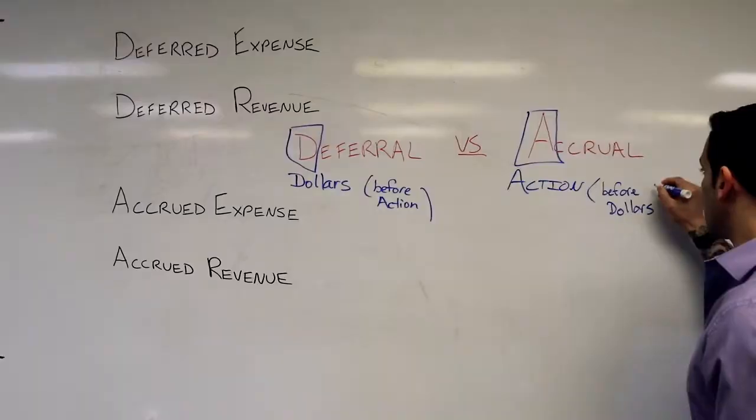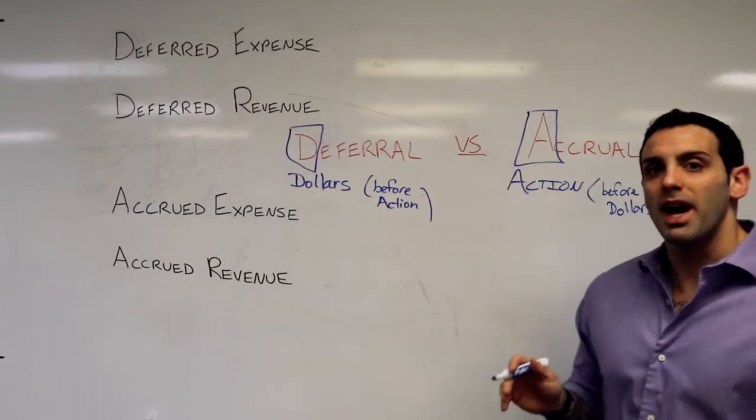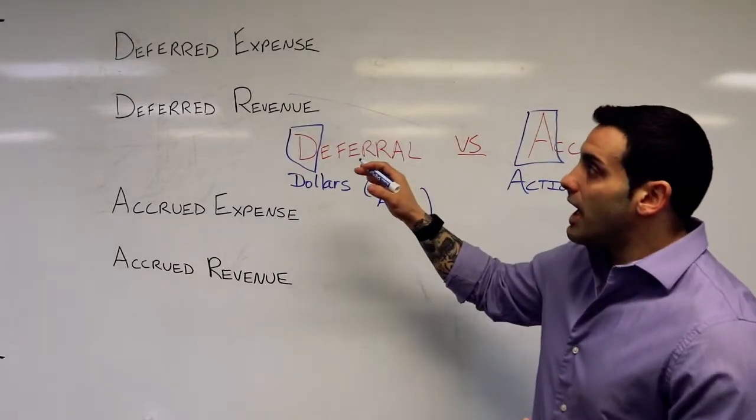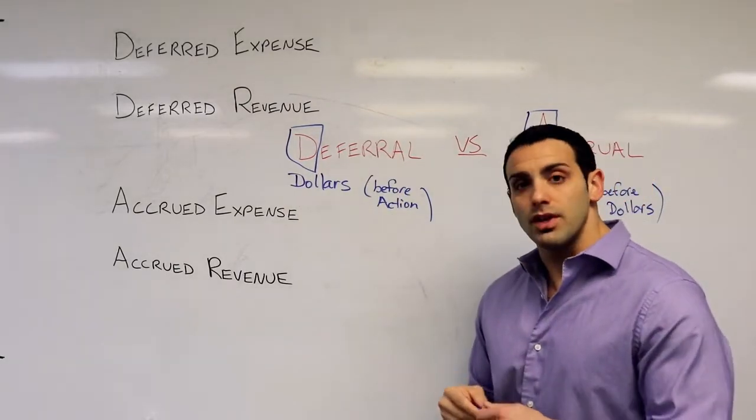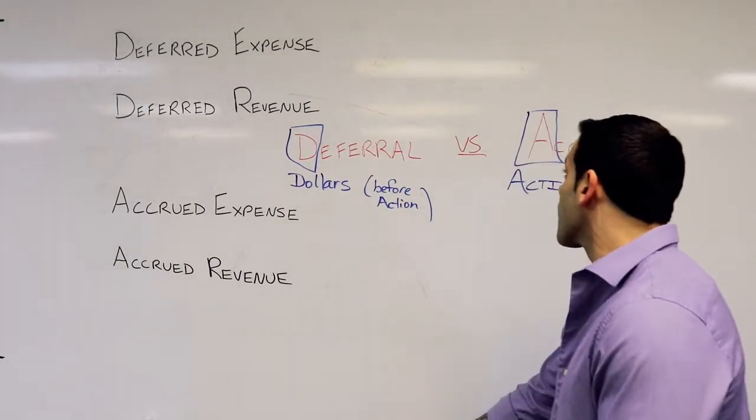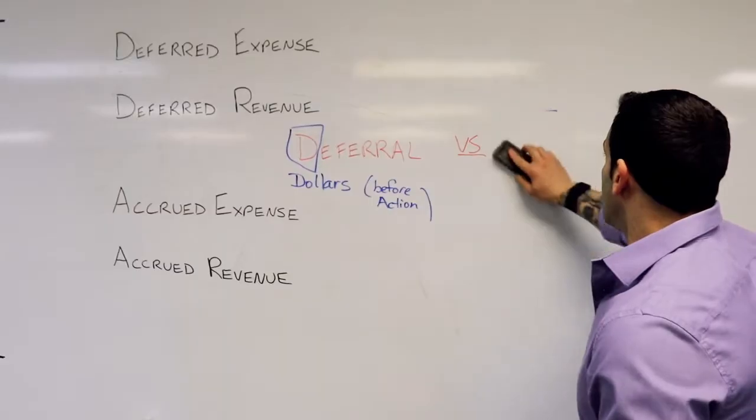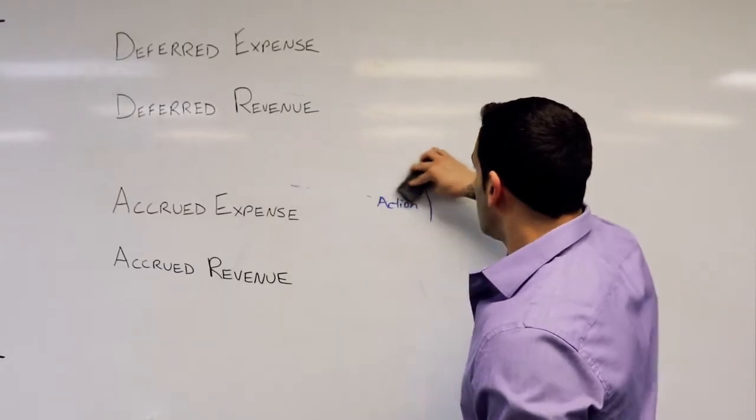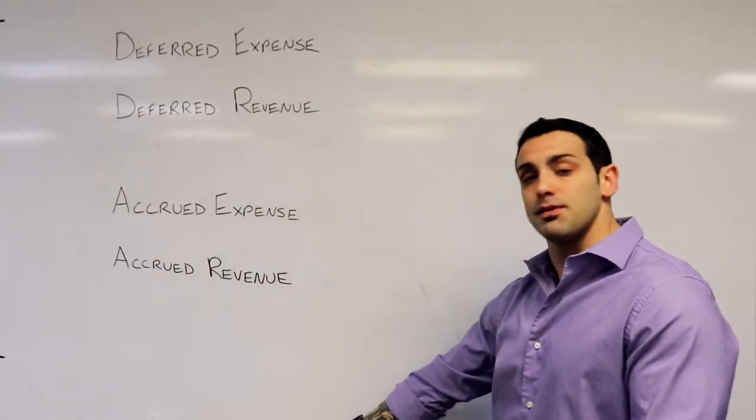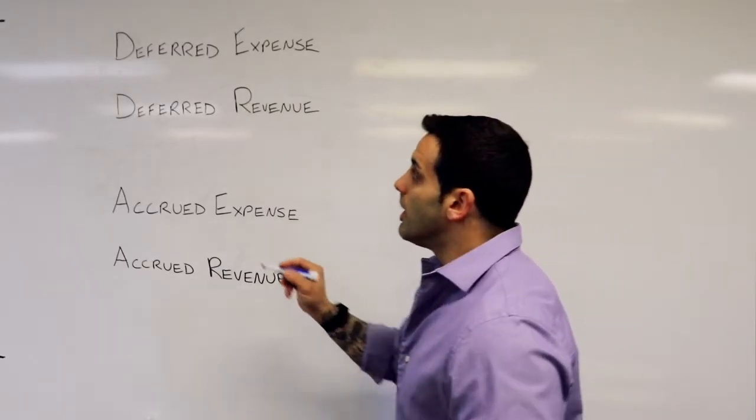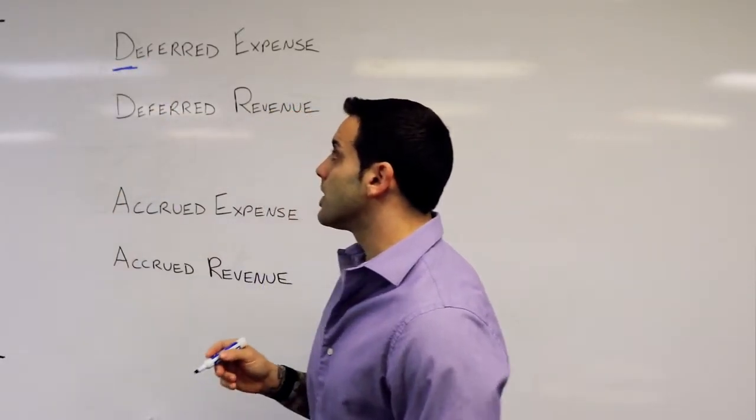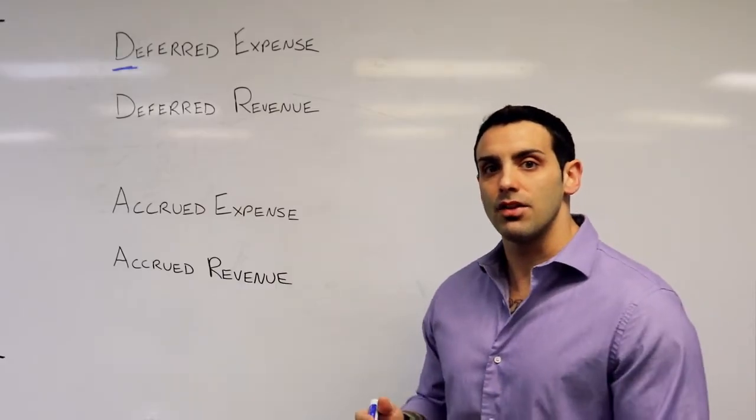Keep this in mind as we identify the four different transactions that could come up. First, we have deferred expense. It starts with the letter D, so let's think dollars before action.